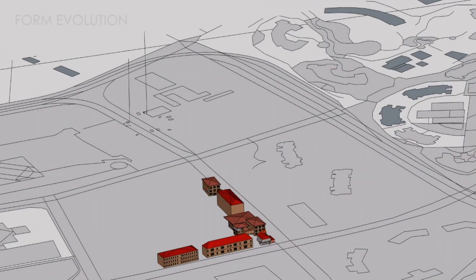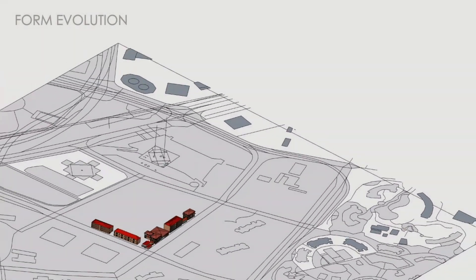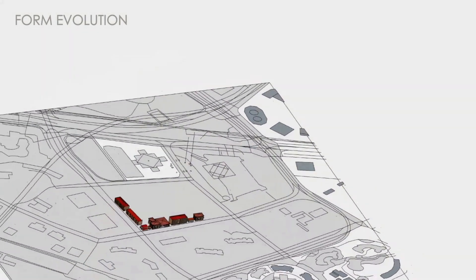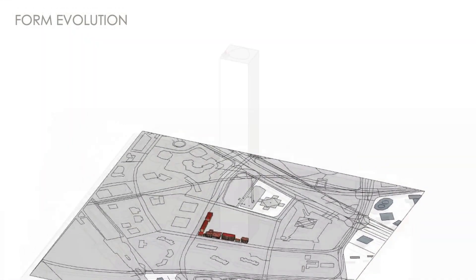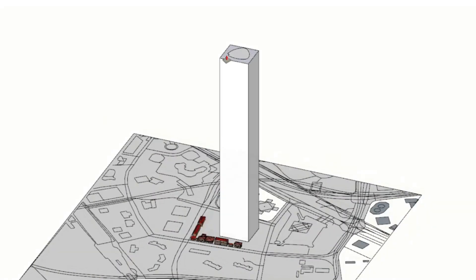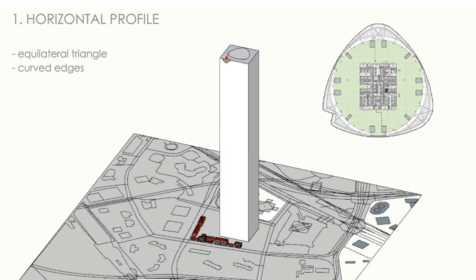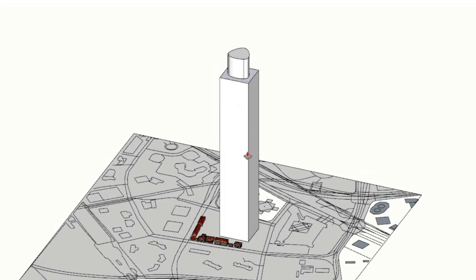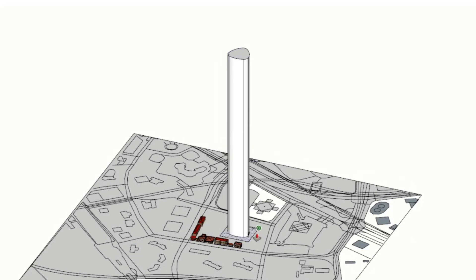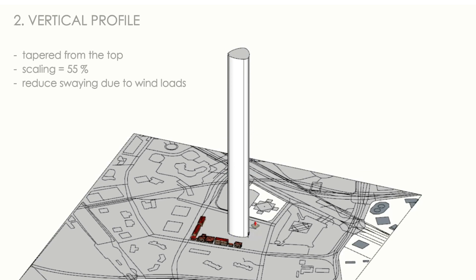The tower's form can be broken down into three key components used to tackle the typhoon-force winds of Shanghai. The first is the Horizontal Profile: the profile shape is based on an equilateral triangle. Two tangential curves offset at 60 degrees are used to create a smooth shape. The curved edges increase the tower's resistance to wind.